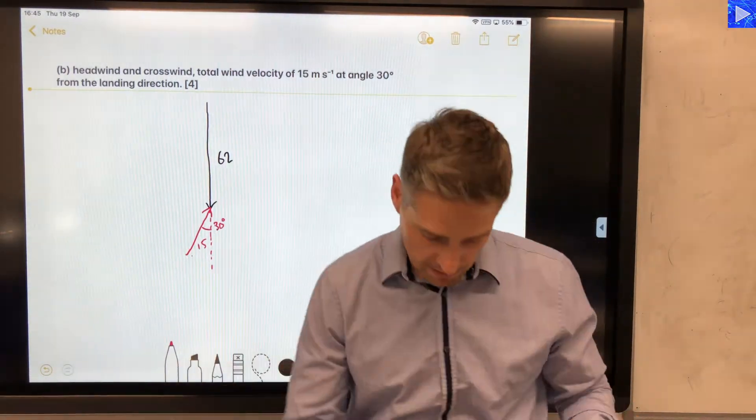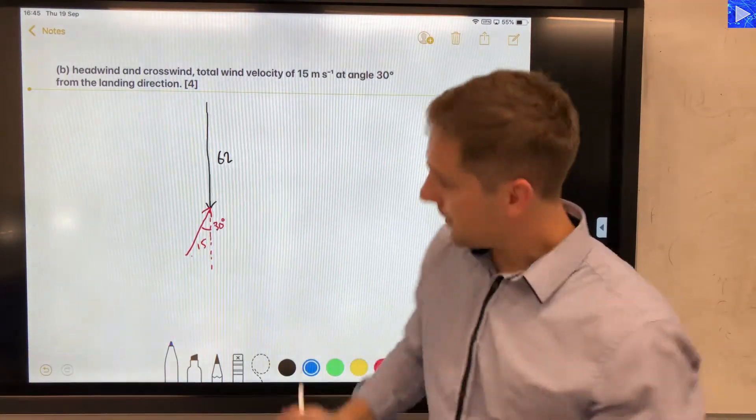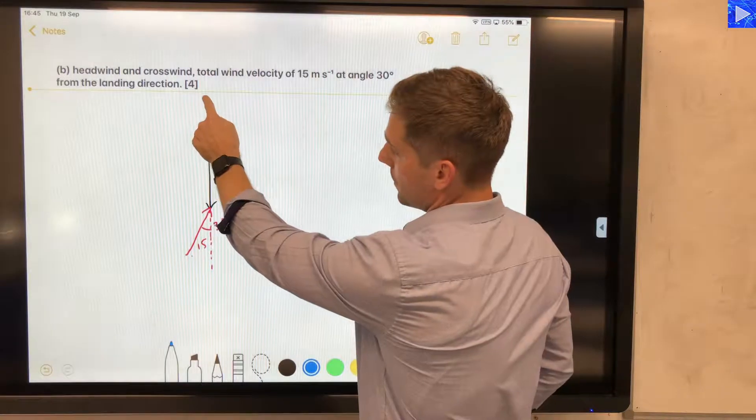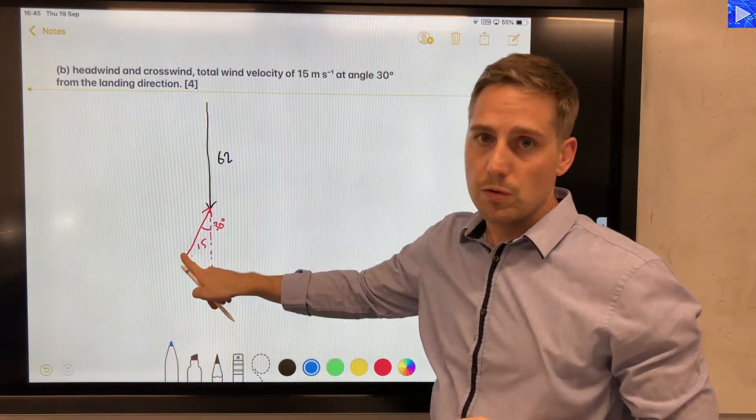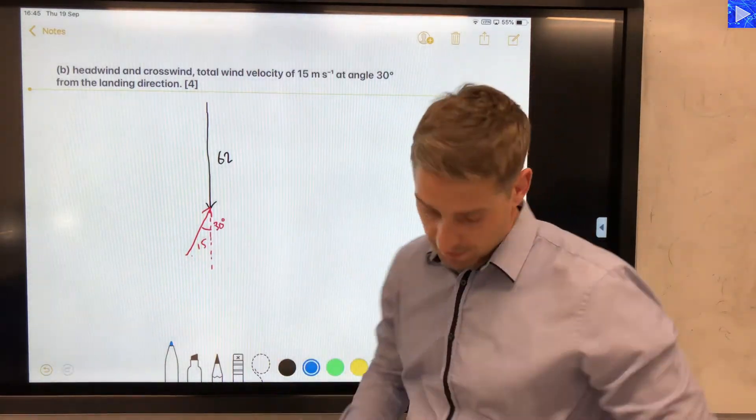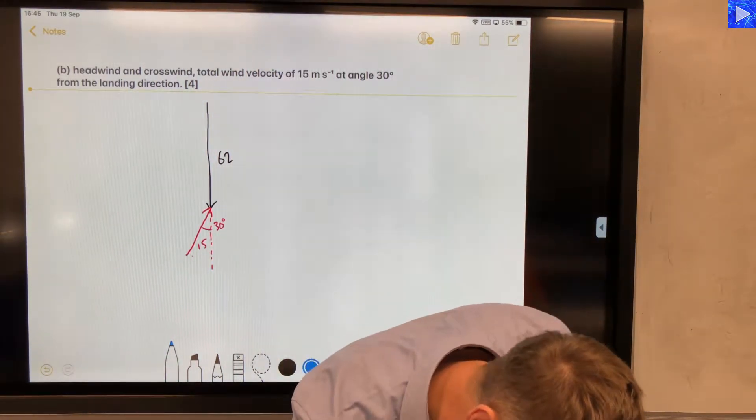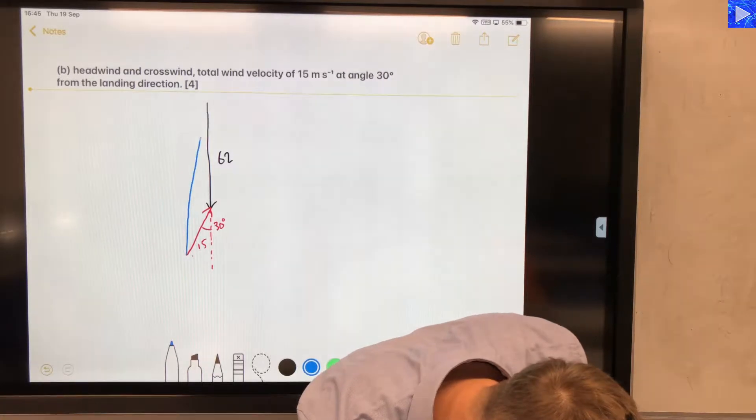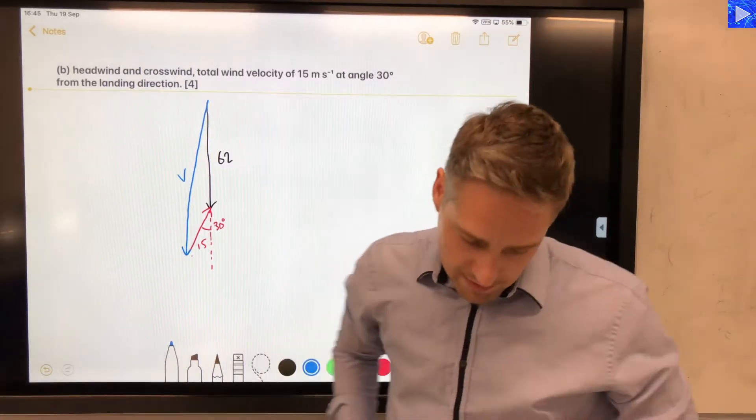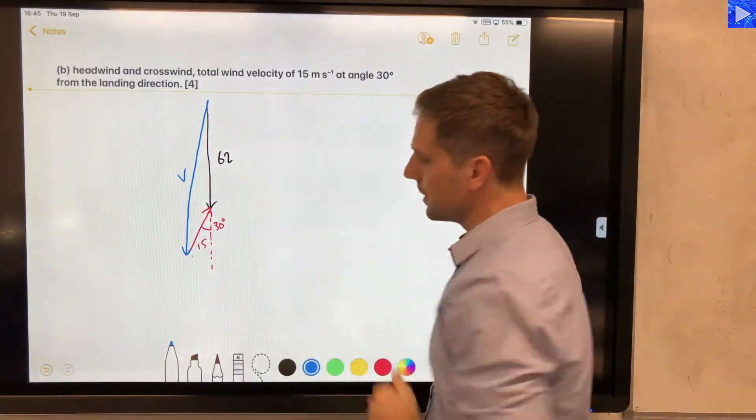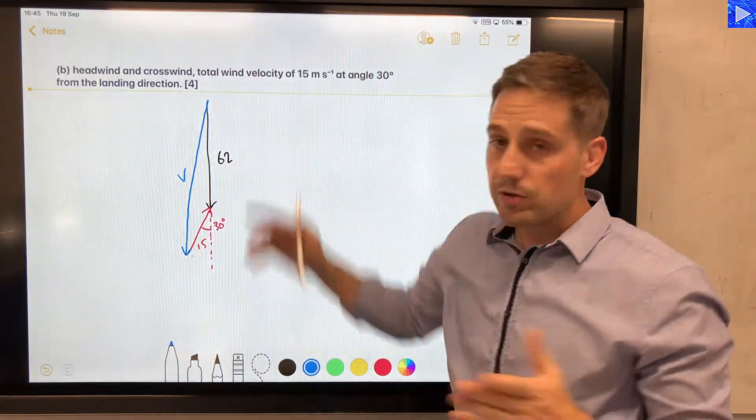Okay, so now we do the same thing as last time. We need a velocity vector starting at the origin of the 62 meter per second vector and going to join head to tail with the 15 meter per second one. This is a bit of a longer one, but it's a bit curved, but hey, that's okay. We know it should be straight between those. So that's our triangle there.